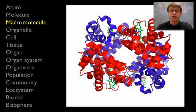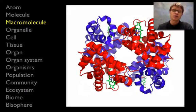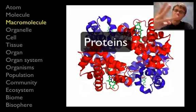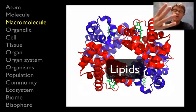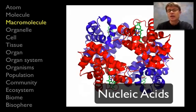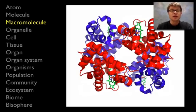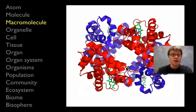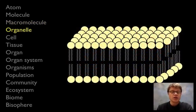If we go to the next level, we have macromolecules, or large molecules. The four different types are carbohydrates, proteins, lipids, and nucleic acids. An emergent property is that they're built of monomers — repeating building blocks — and they eventually show what's called polymerization.